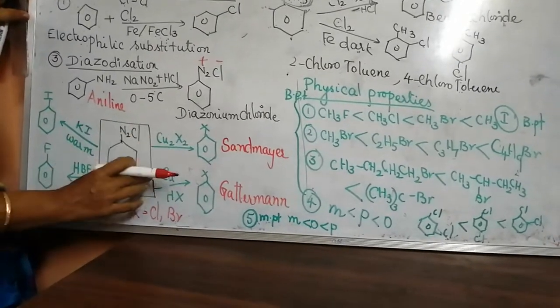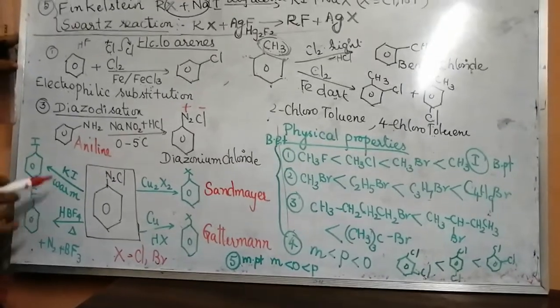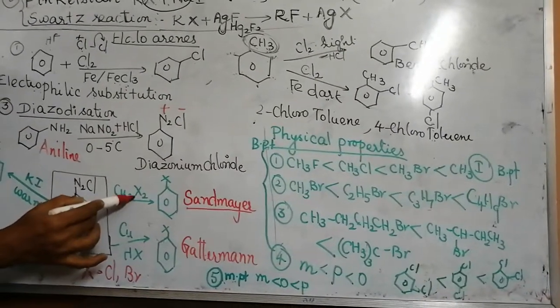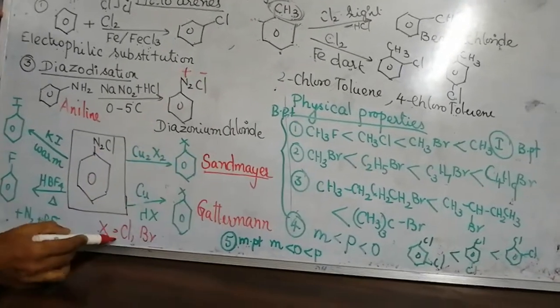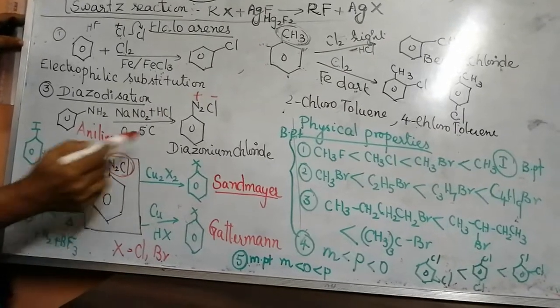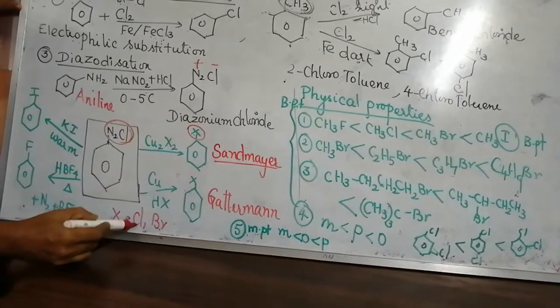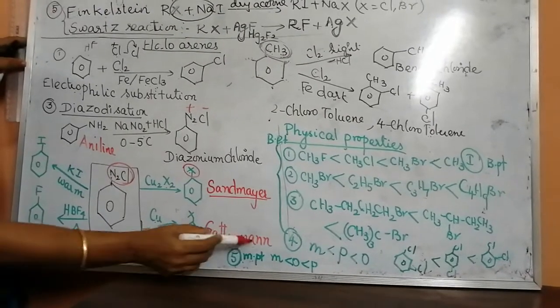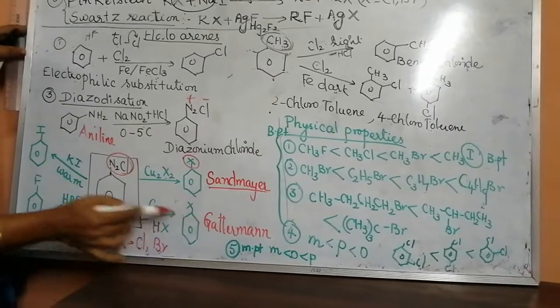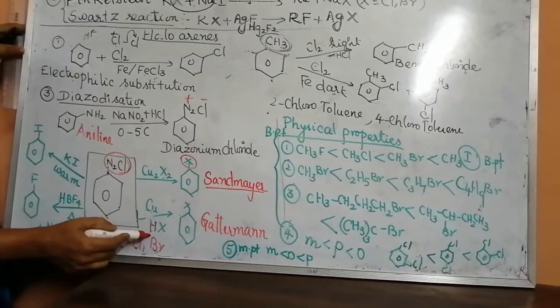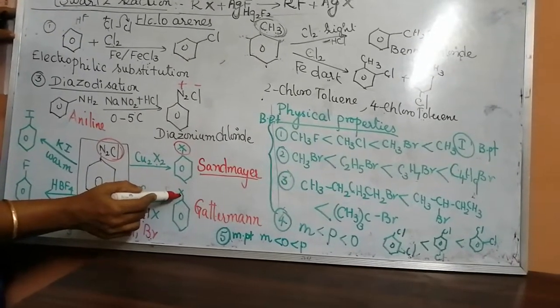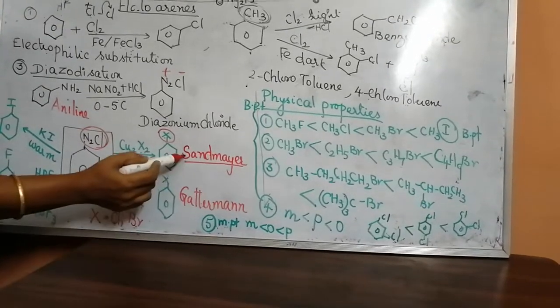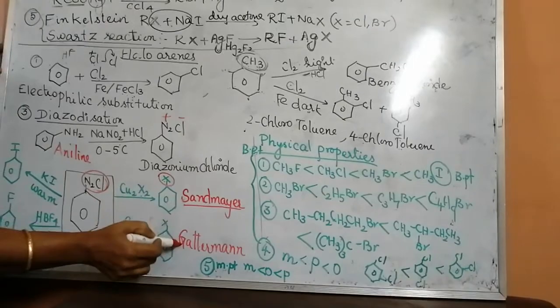Now, I am taking the diazonium chloride and I am getting chlorobenzene, bromobenzene, iodobenzene, and fluorobenzene. This is called Sandmeyer reaction. When this diazonium chloride is treated with Cu2X2, copper chloride, the X can be chlorine or bromine. Instead of this N2Cl, only the X will be substituted - chlorine or bromine. Instead of Cu2X2, if you use only copper and HX, then it is called Gatterman reaction. Sandmeyer uses Cu2X2. Same reaction was performed by Gatterman by using copper and HX.